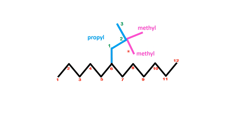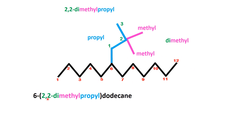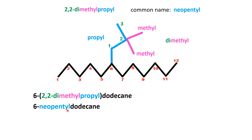Now let's add another methyl to the second carbon of the propyl chain. This modification creates a more branched structure. To name the substituent, first identify the longest chain within the substituent, which remains the propyl chain. The second carbon now has two methyl groups attached to it. Numbering starts with the carbon attached to the main chain as carbon 1. This substituent is systematically named 2,2-dimethylpropyl. Combined with the parent chain, the full IUPAC name of the compound becomes 6-(2,2-dimethylpropyl)dodecane. In common nomenclature, this substituent is referred to as the neopentyl group because it resembles a pentane derivative with a highly branched structure. Using the common name, the compound is called 6-neopentyldodecane.